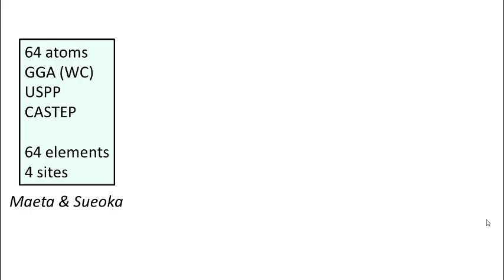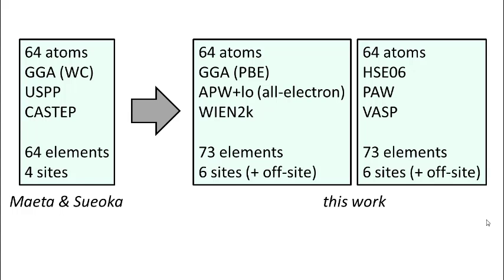So that's where we try to improve on. So this was the kind of computational settings that were used in this previous study. First, we do similar calculations using the same exchange correlation functional, but exactly that PBE form for which we did all this error bar analysis. We do it with a different code, but that shouldn't matter. We take a bit more elements, a bit more sites.